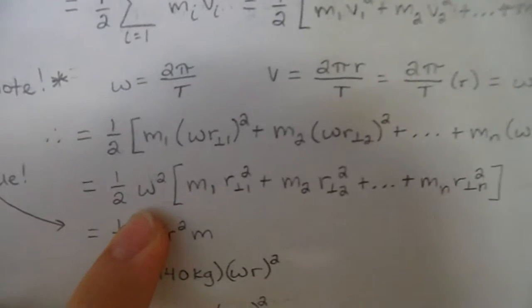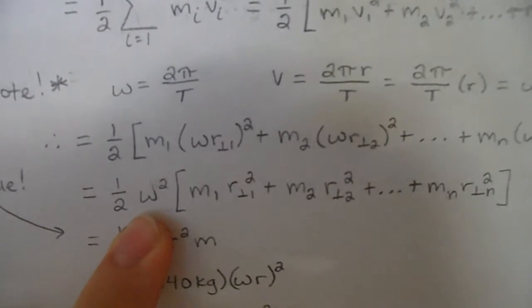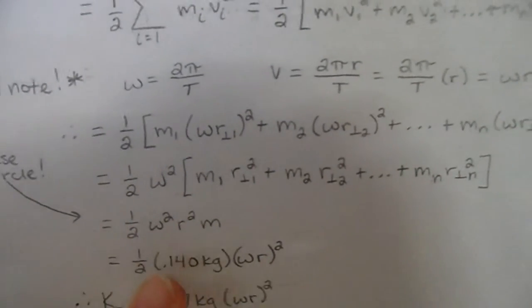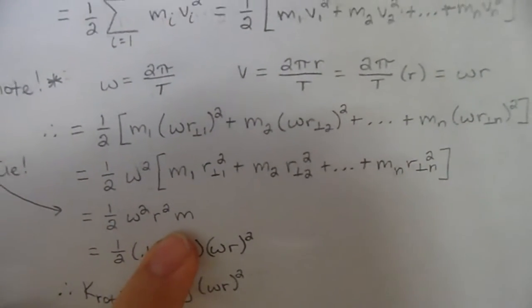Now, we can pull this omega squared out since it's the same for every time. We can factor it out because it's the same thing every single time. And then, we can also pull out the radius squared and the mass.